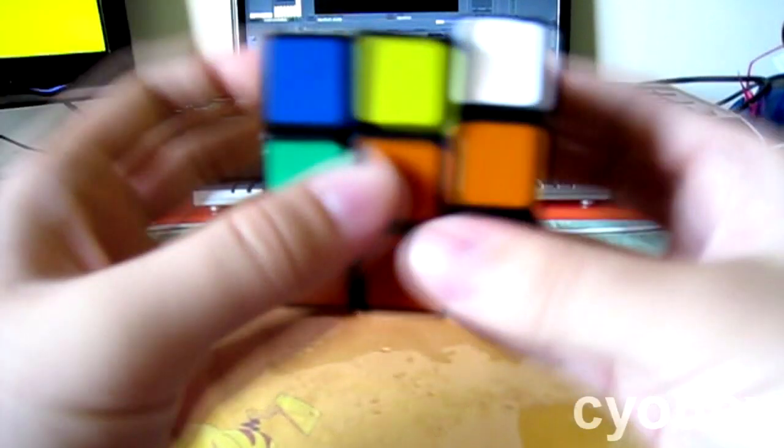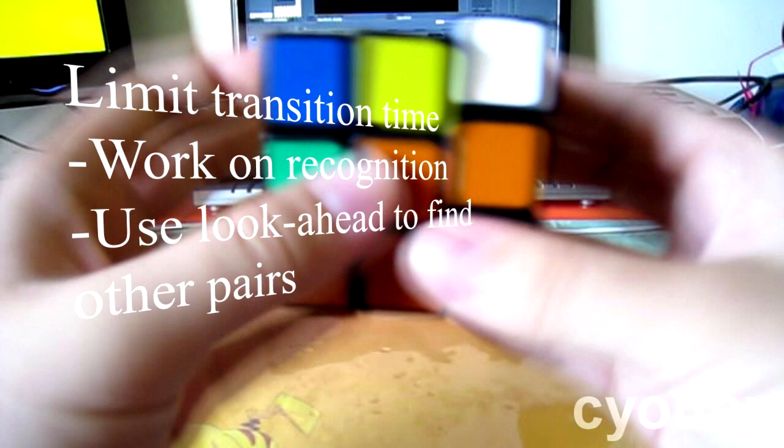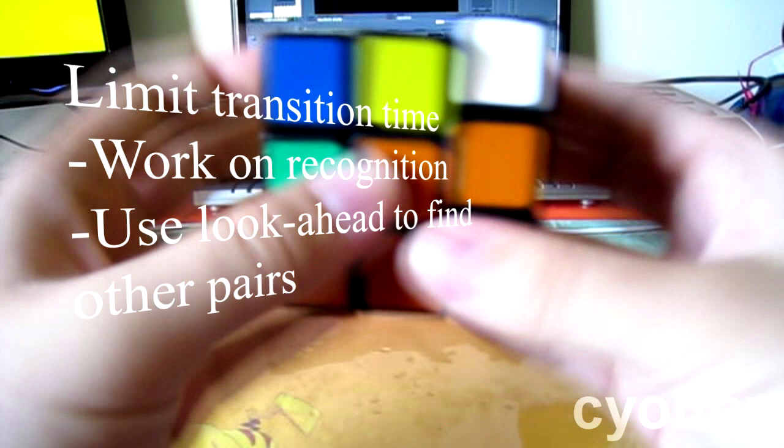Try to limit the time it takes for you to transition from cross to F2L. Although, in this clip, the way that it's cut, it seems like a really short amount of time, anything that's greater than a second is really inhibiting you to get sub-20. So, if you can minimize the time that it takes for you to find your first F2L pair, you'll be in much better shape.